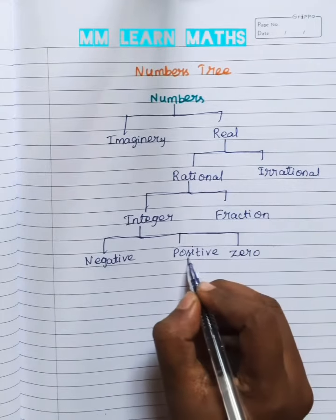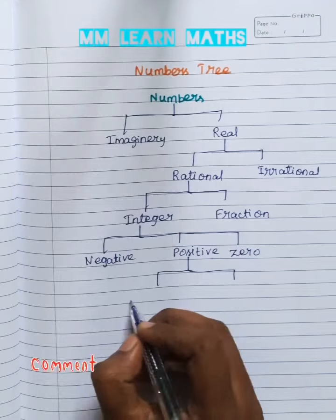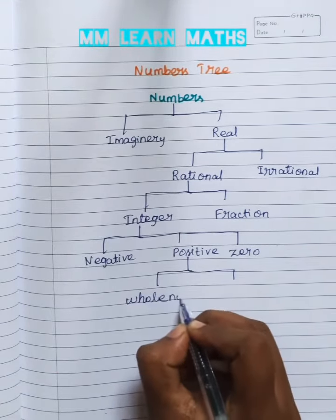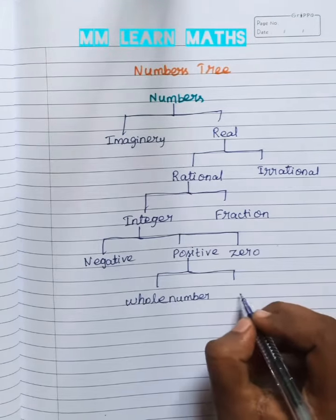Then positive integer, two type. Whole numbers. Natural numbers.